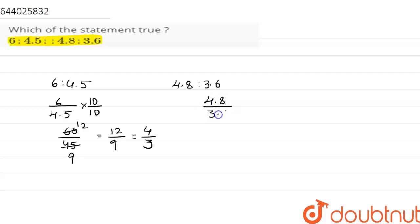Now we write 4.8 is to 3.6 as a fraction. Multiplying numerator and denominator by 10, we get 48 by 36. This is 6 into 6 is 36, 6 into 8 is 48. This is 8 by 6, which is again 4 by 3.